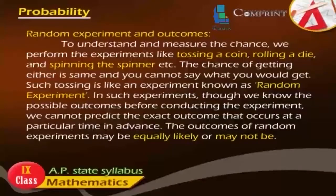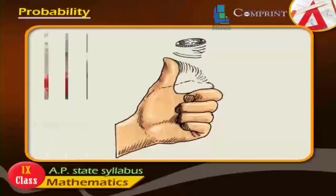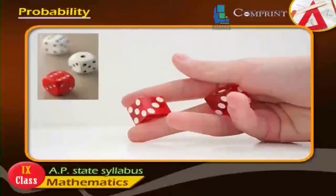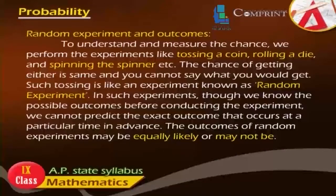To understand and measure the chance, we perform experiments like tossing a coin, rolling a die, and spinning the spinner, etc. The chance of getting either outcome is the same and you cannot say what you would get. Such an experiment like tossing is known as a random experiment.